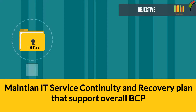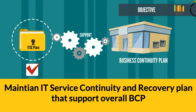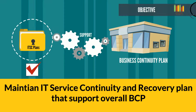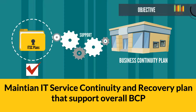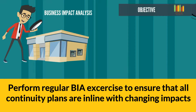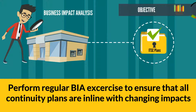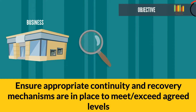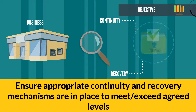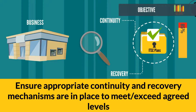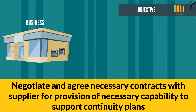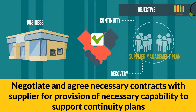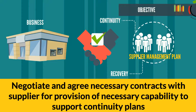The objective of IT SCM is to maintain a set of IT service continuity and recovery plans that support the overall business continuity plan. Perform regular business impact analyses to ensure that all continuity plans are maintained in line with changing business impacts and requirements. Ensure that appropriate continuity and recovery mechanisms are put in place to meet or exceed the agreed business continuity targets. Negotiate and agree on necessary contracts with suppliers for provision of capability to support all continuity plans, in conjunction with the supplier management process.